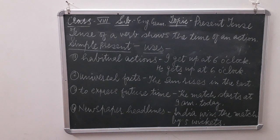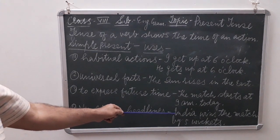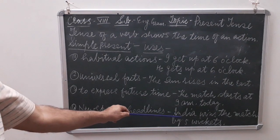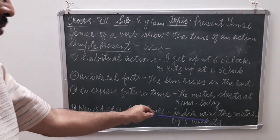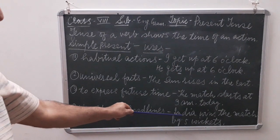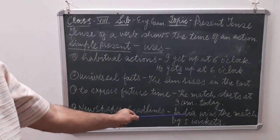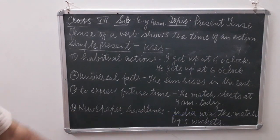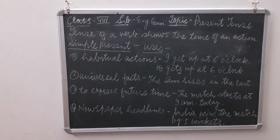Use number four: newspaper headlines. Any event that already took place in the past, but in newspaper headlines it is written in simple present. For example, 'India wins the match by five wickets.' This event already took place in the past, but in the headline it comes as 'India wins' — simple present.